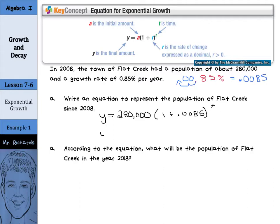Now, we do need to finish simplifying this, which is simply saying, okay, y equals 280,000 times, add those two numbers up in the parentheses to get 1.0085 to the t power. Now, according to the equation, what will be the population of Flat Creek in the year 2018?